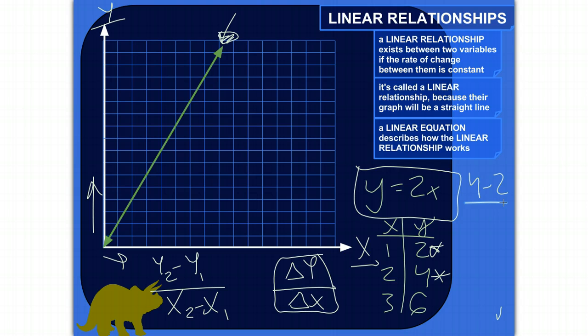So 4 minus 2 is 2, 2 minus 1 is 1. We could simplify that to 2. So the rate of change between those two points is 2.